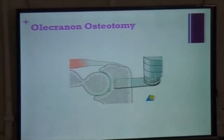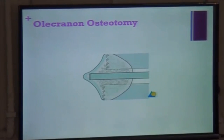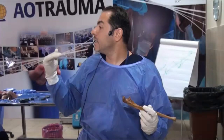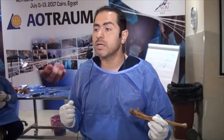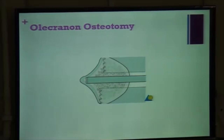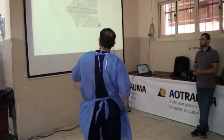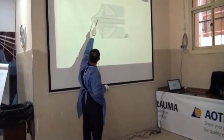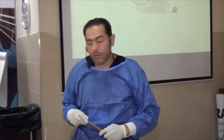You start with the oscillating saw, then finish with a manual saw. You reach the subchondral bone with the oscillating saw, then finish with the regular saw. There is a ridge in the trochlear notch — sometimes you need a small osteotome to ensure a uniform surface on your cut.